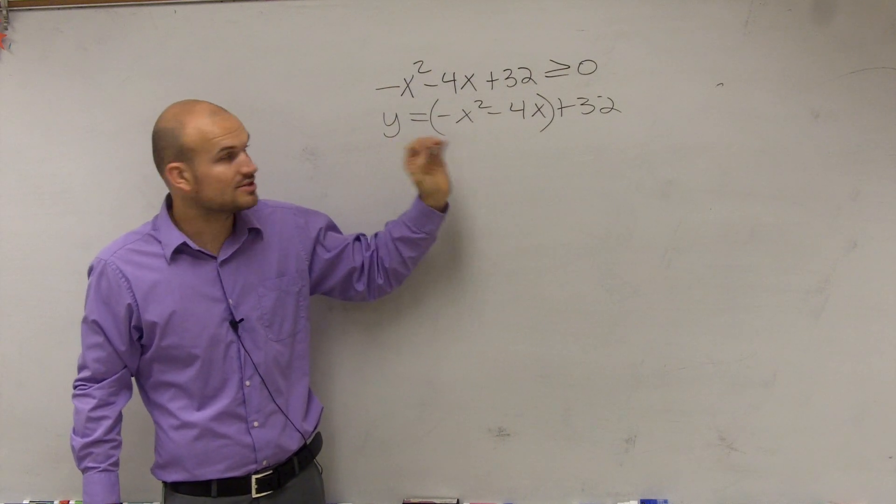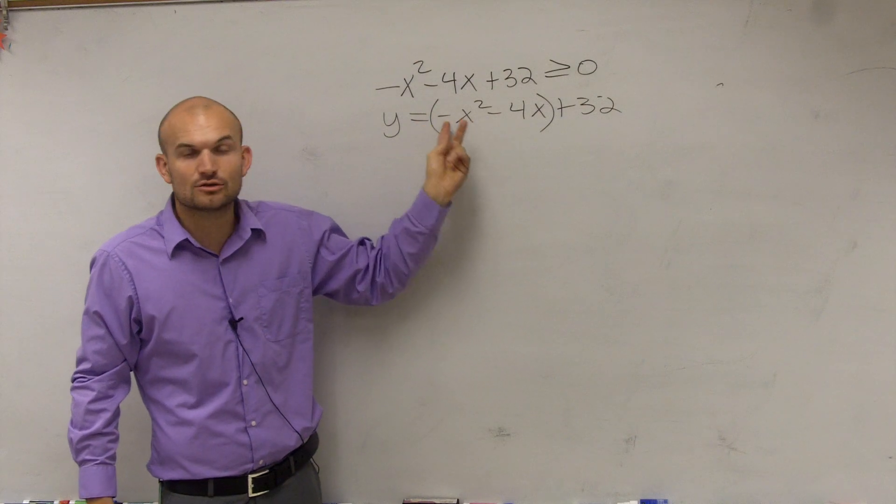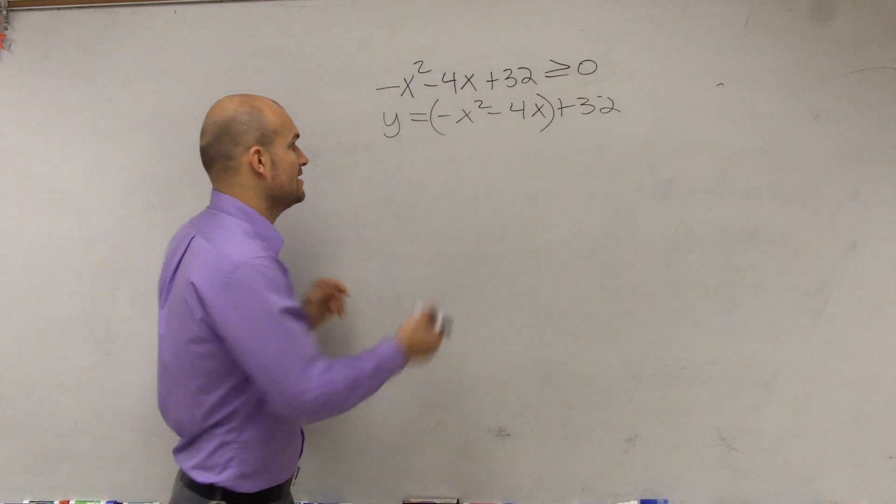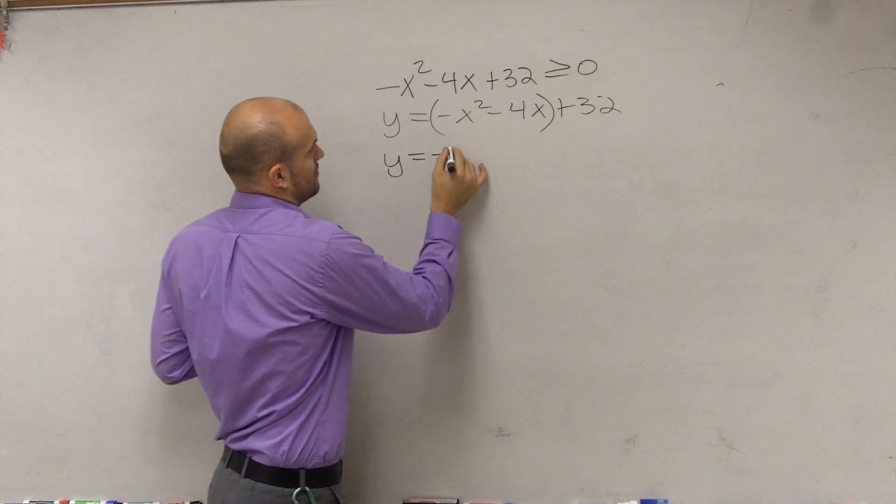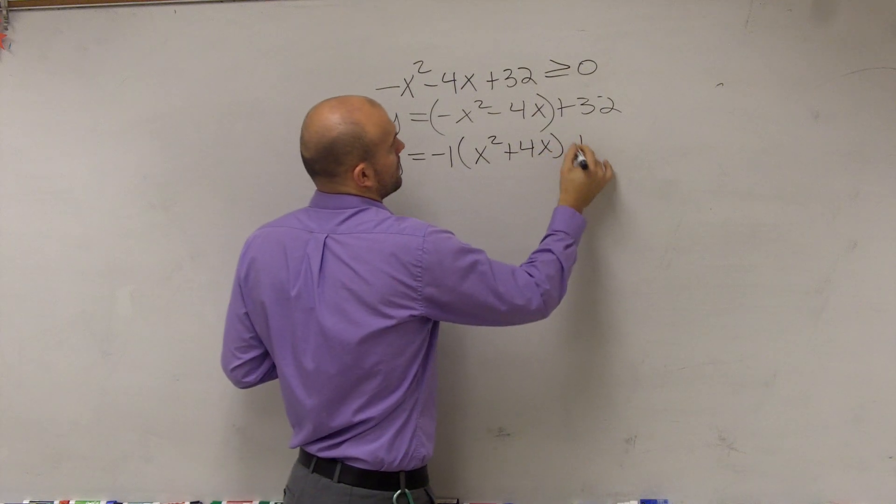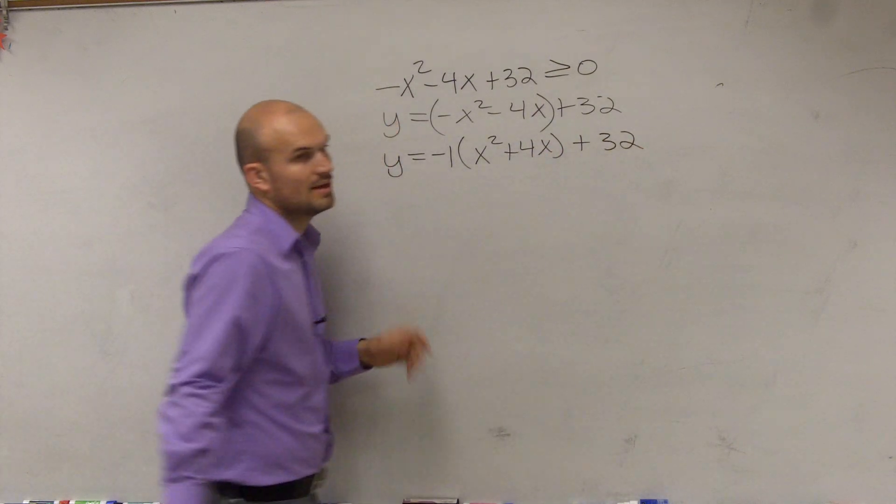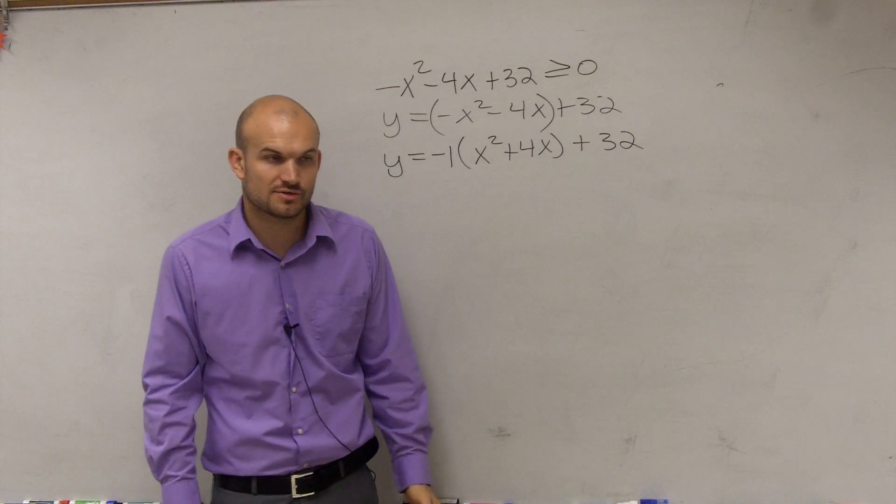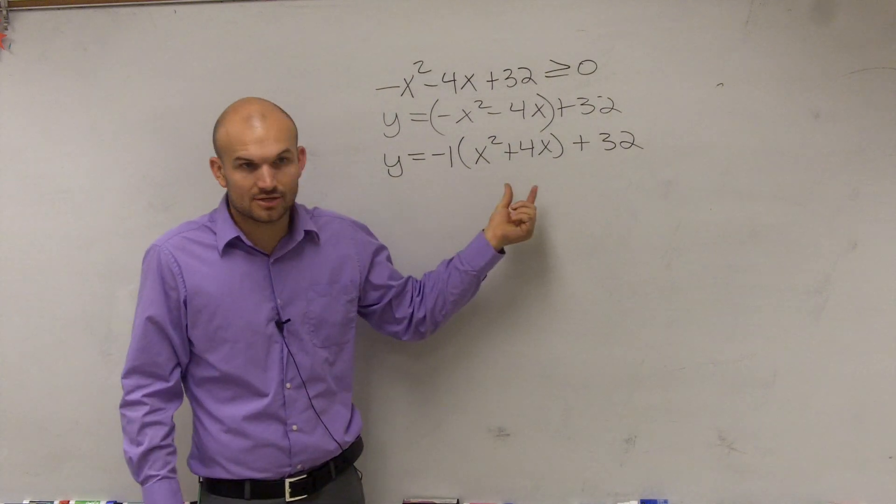Here, my a is equal to negative 1. So I have to factor out a negative 1. I'm only factoring the negative 1 out of the first two terms. Now, I can complete the square.